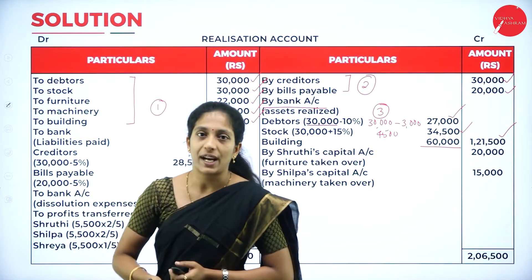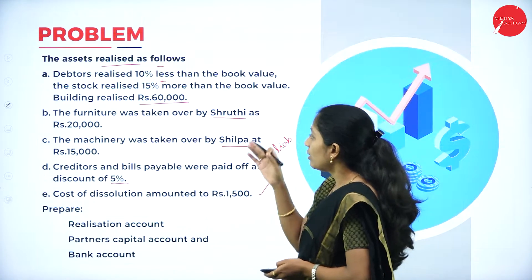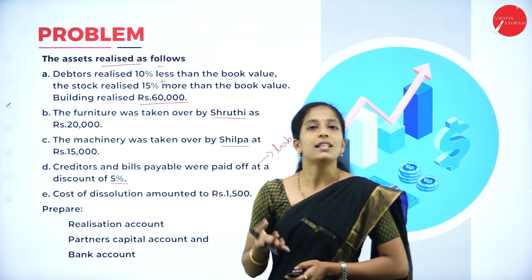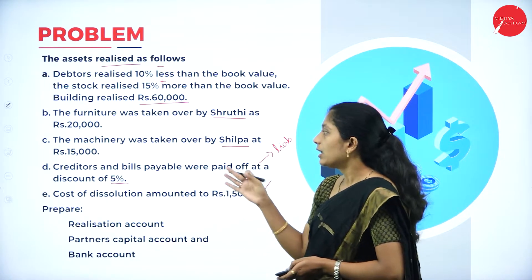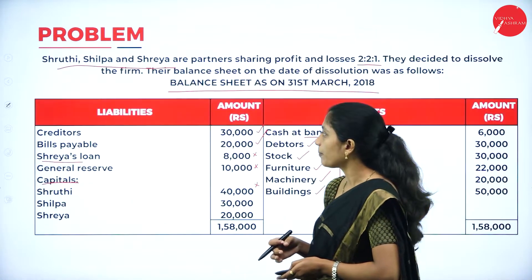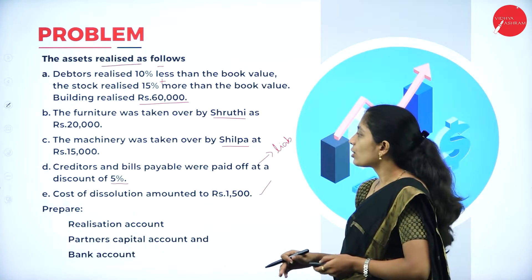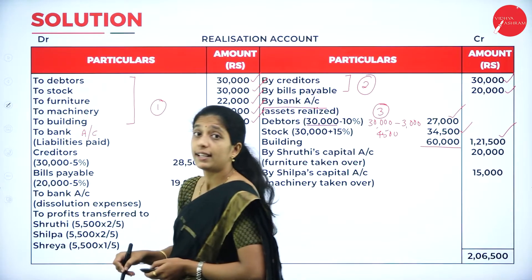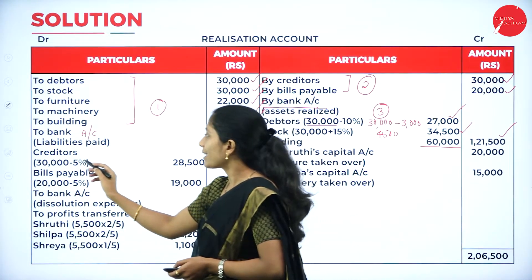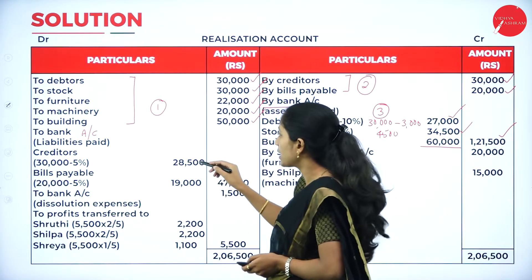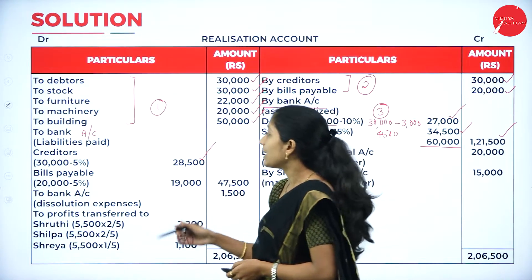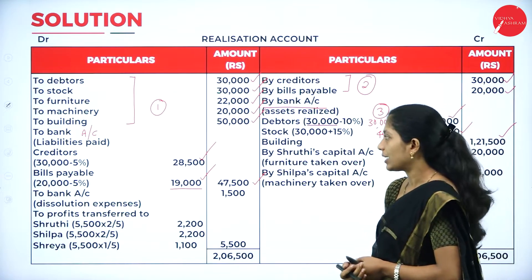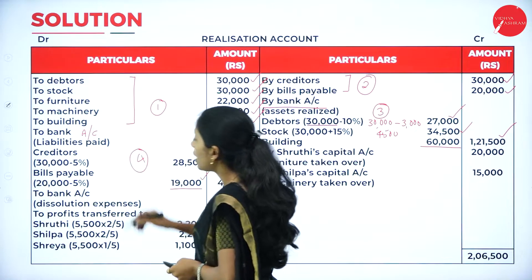Fourth step — liabilities paid. Creditors ₹30,000 minus 5% discount = ₹28,500. Bills payable ₹20,000 minus 5% discount = ₹19,000. Total liabilities paid: ₹47,500. Record as: To Bank Account (liabilities paid) ₹47,500.